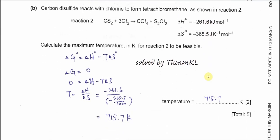Part B: Carbon disulfide reacts with chlorine to form tetrachloromethane as shown in reaction 2. The enthalpy and entropy changes are given. Calculate the maximum temperature for reaction 2 to be feasible.